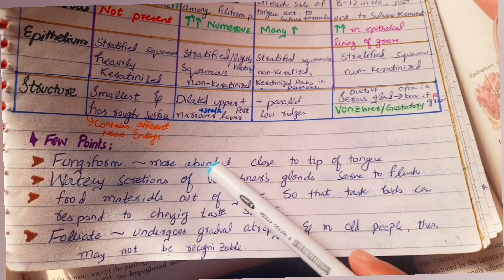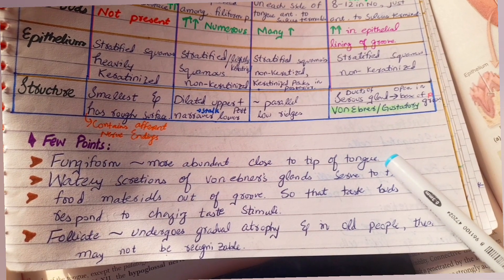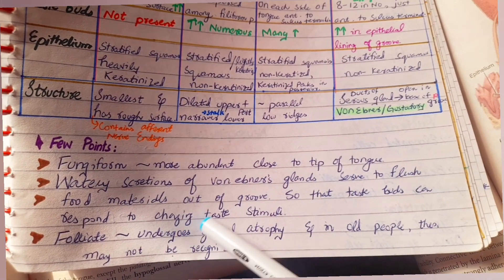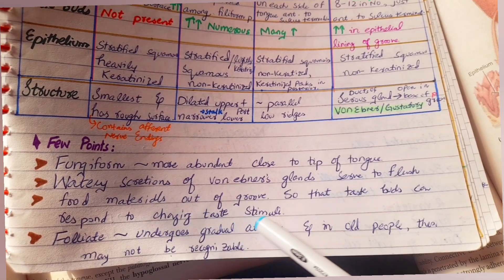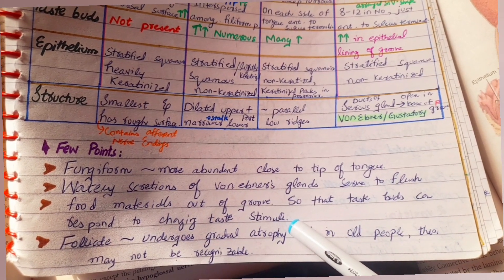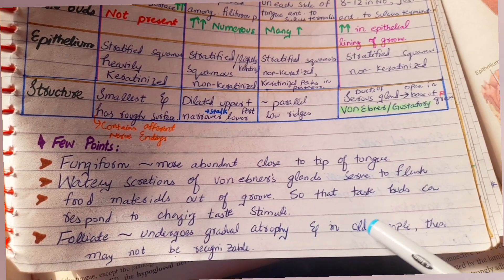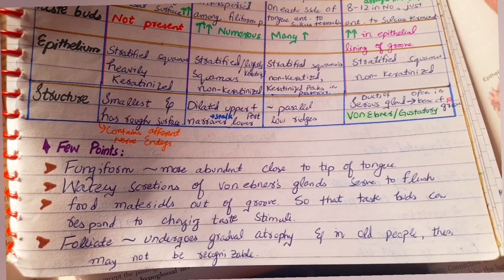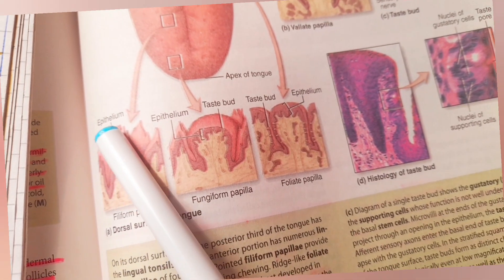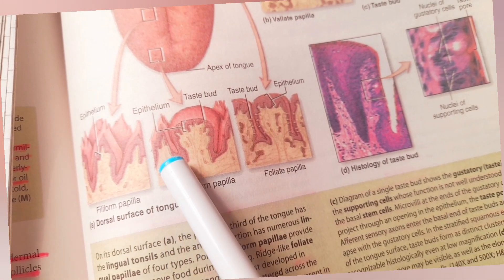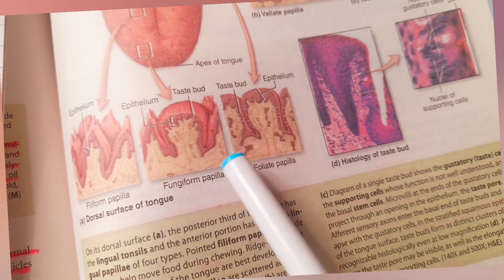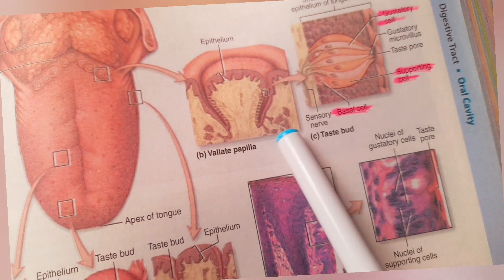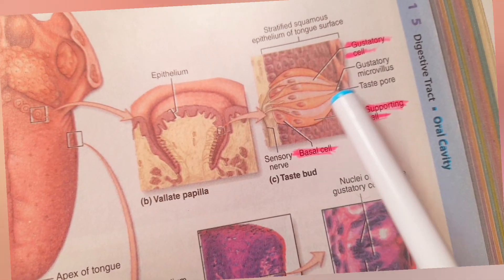Fungiform papillae are more abundant close to the tip of the tongue. The watery secretions of von Ebner's gland serve to flush food materials out of the grooves surrounding the circumvallate papillae so that the taste buds can respond to changing taste stimuli. Foliate papillae undergo gradual atrophy, so in older people they may not be recognizable. Circumvallate papillae are surrounded by trenches or grooves that contain the taste buds.